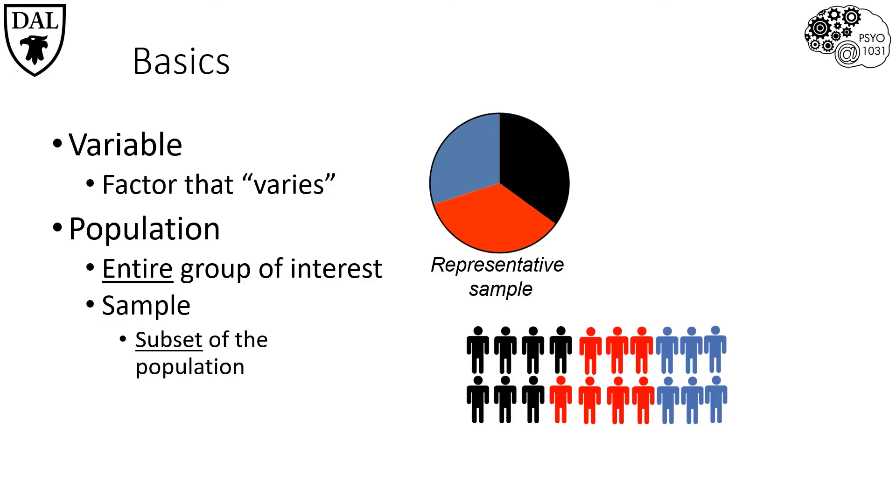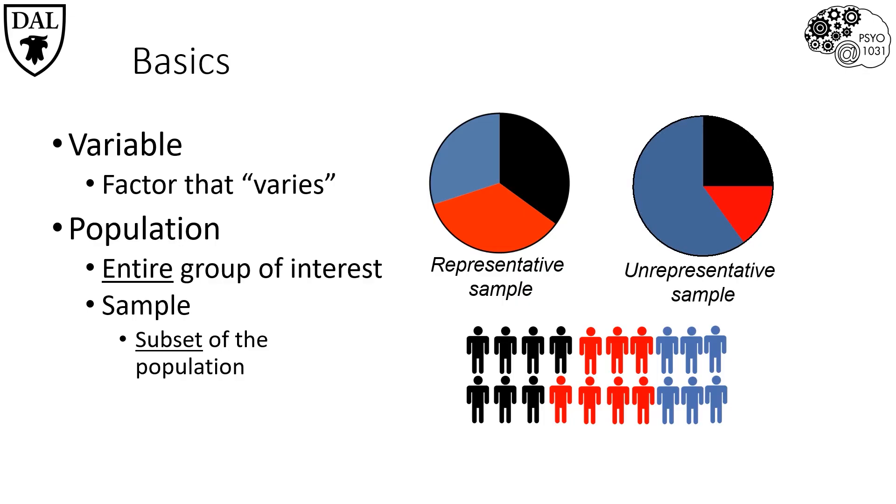You wouldn't want to ask a question about children and then only test females, because the population of children, of course, is made up of more than just girls. If we want the results that are applicable to the population we're interested in, then we need our sample to match that population.